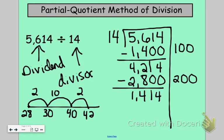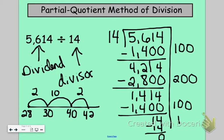So I see that I have 1,414 still left that I need to keep dividing here. So let's take out another 100. And I know that's going to be 1,400. And I still have 14. Oh, this works out so nicely. So I can take one more group of 14 out. And I am left with nothing as a remainder, which is amazing.